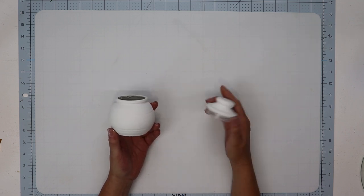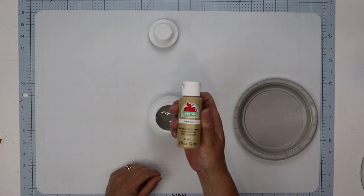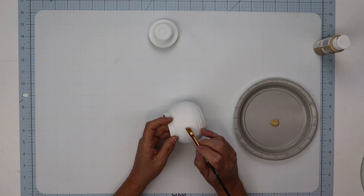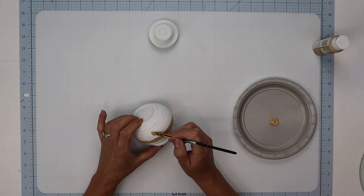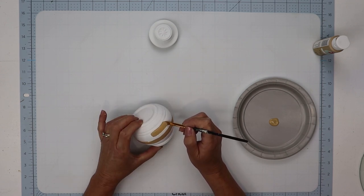Then I used Apple Barrel's acrylic paint in the color khaki and very carefully with an angled brush went around the center of the jar, giving this two coats, allowing it to dry in between coats.